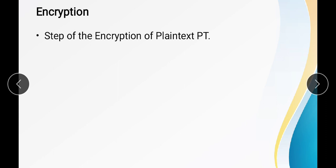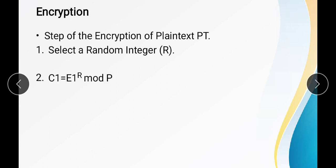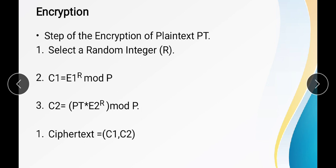For encryption, we need the plaintext pt and a random number r. The two formulas are: c1 = e1 raised to r mod p, and c2 = pt × (e2 raised to r) mod p. After applying these formulas, we get the ciphertext as (c1, c2).